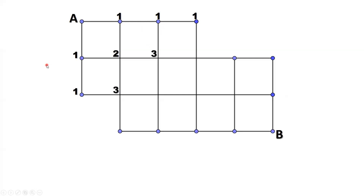Let's move on. Look at this point. This point can be reached from the top point or the point on the left. Here is two, here is one. One plus two equals three — you have three different ways to reach this point from point A. Similarly, for this point, you have one way from the point on the left and two ways from the point on top. One plus two equals three, so from A to reach this point we have three different ways.